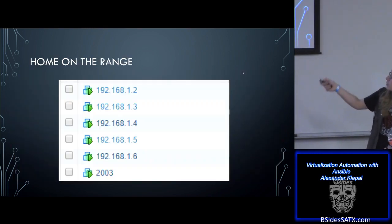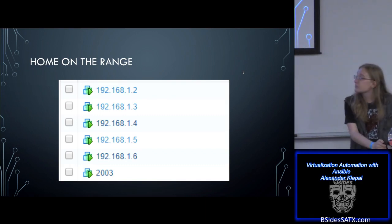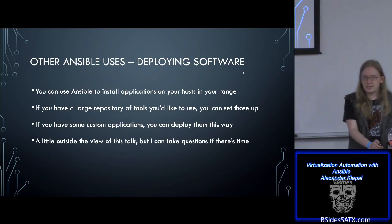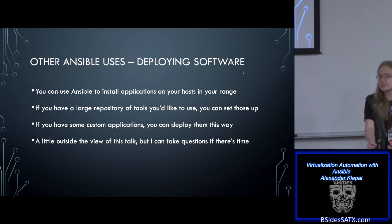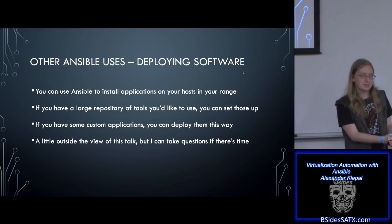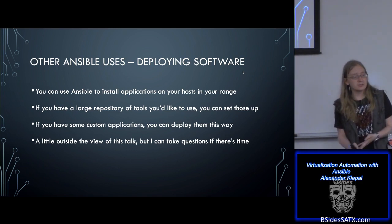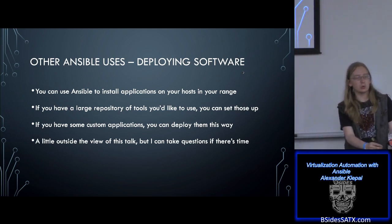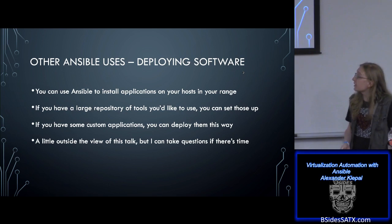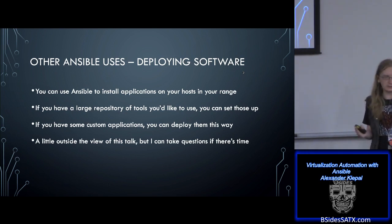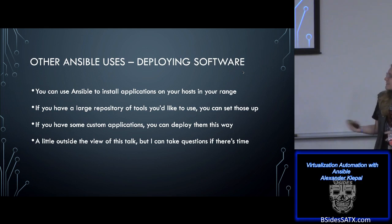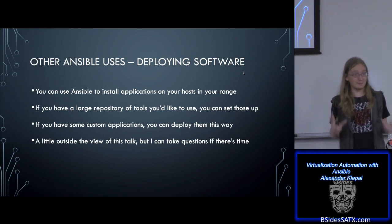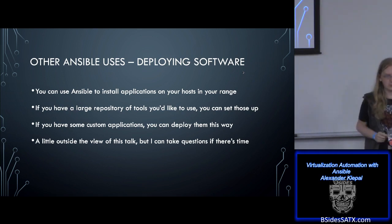Here is my new range, just like declared in the host file. Other use cases for Ansible include deploying software — you can use it to connect to Apt, or on Windows, Chocolatey, to install software across your cyber range and your enterprise network. If you have custom applications you've written that you want to test in your range, you're able to do that as well. I realize I'm talking really fast, so there will definitely be time for lots of questions.